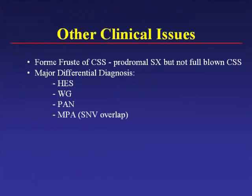There may be forme fruste presentations of Churg-Strauss where prodromal symptoms are present but not all diagnostic criteria are met. The major differential diagnoses are the other necrotizing arteritides—Wegener's, polyarteritis nodosa, microscopic polyangiitis—and the hypereosinophilic syndrome. All of these are very rare. These are diagnoses that if you don't think of them, you'll never make them; but if you do think of them, it becomes easier to differentiate what a patient might have.